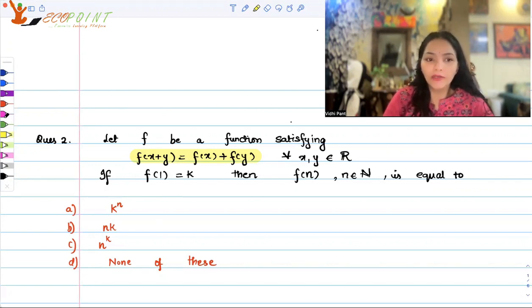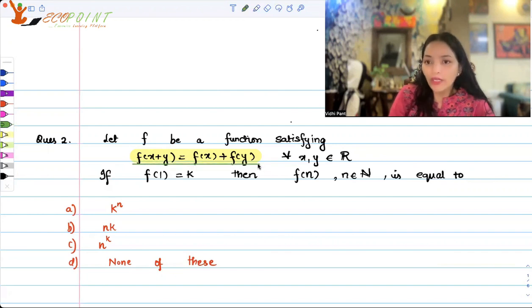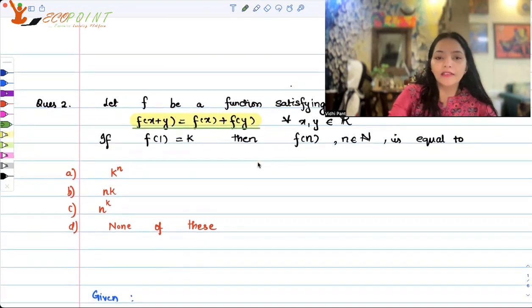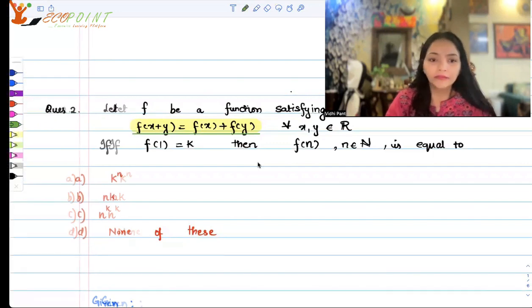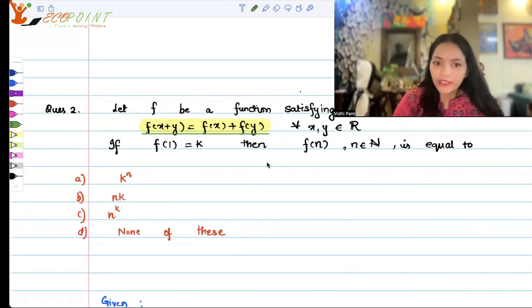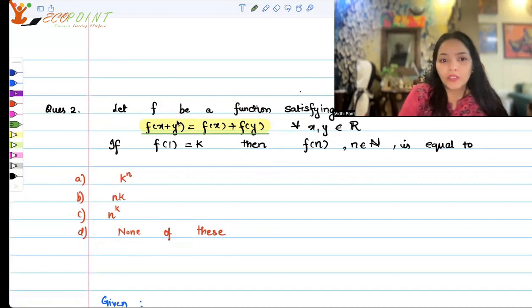See, the property that you see here is called the property of additivity. It's an additivity property and it is satisfied by all linear functions. In fact, in case additivity and homogeneity is satisfied, then the function is linear. So additivity is a property which looks like this and it is satisfied by all linear functions. You can even prove this.